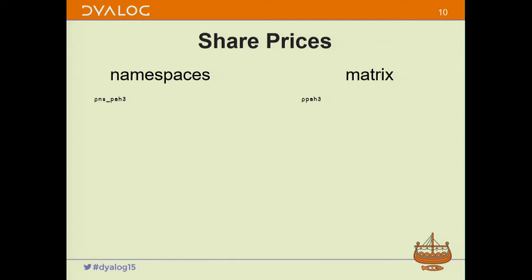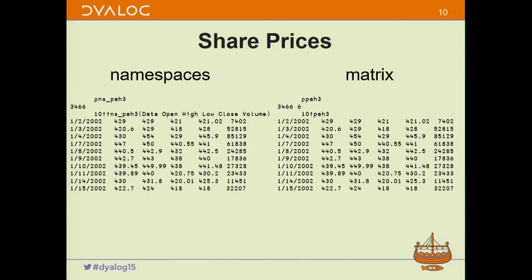We're going to data bind to this information both as a matrix and as a vector of namespaces and see where things might differ from the APL side. In the namespace case we have a vector of prices; in the matrix case we have a matrix of prices. In each case there are 3,466 prices — data for about 3,500 days going back roughly 10 years. Looking at the first 10 rows, the matrix expression is easier, but in the namespace case we have to know the names of all our fields.